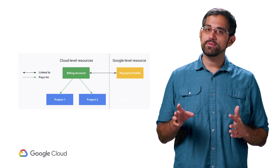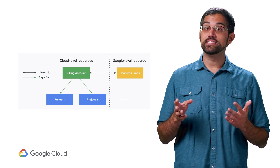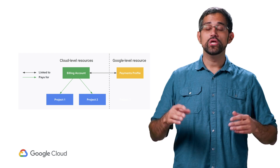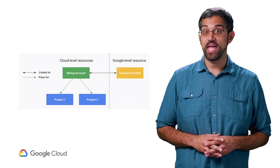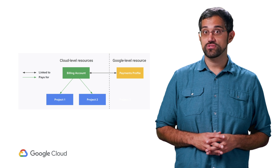In the last video, we looked at an overview of how GCP resources are organized. In order to make sure those resources are paid for correctly, the billing account and payments profile need to be set up with the right permissions. Some GCP services have free tiers, but you won't be able to go beyond that tier without having to pay for all the usage.